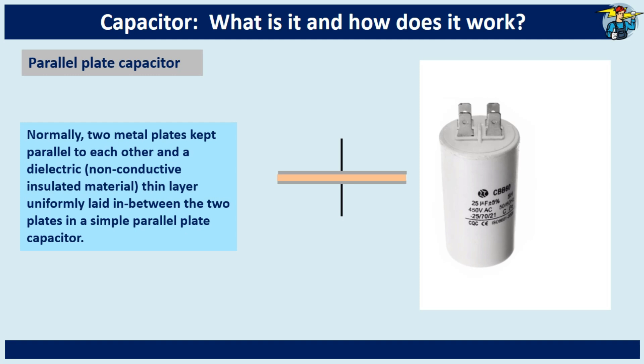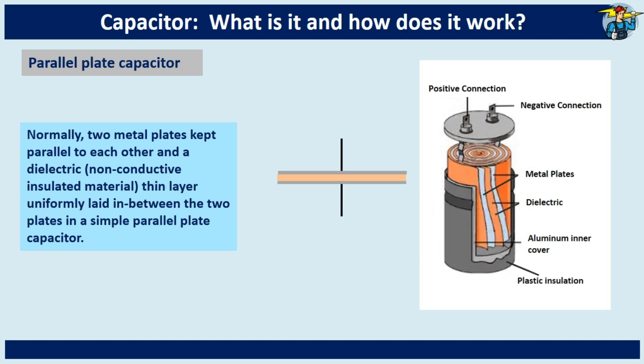If you remove the cover of this condenser, you will see the inside like this. Here the positive and negative connections are marked, and you can also see the two metal plates with the thin dielectric.